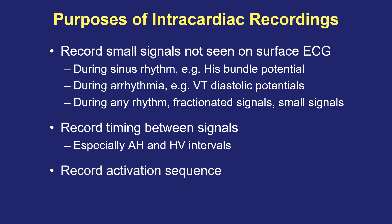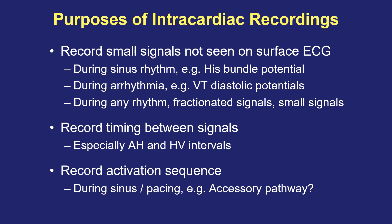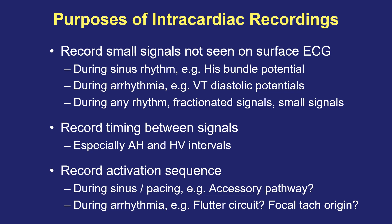Lastly, we want to look at the activation sequence. We can often guess where a signal originates by looking at the surface EKG P wave or QRS. But if you want very detailed information about how a wavefront is traveling across myocardial tissue, we put catheters in the heart and record from multiple sites. During sinus rhythm or pacing, we can figure out how the atria and ventricles are connected — is it only through the AV node, or is there an accessory pathway? And if there's an arrhythmia such as atrial flutter or a focal atrial tachycardia, we can precisely define where the circuit is located or where the focal tachycardia is coming from.